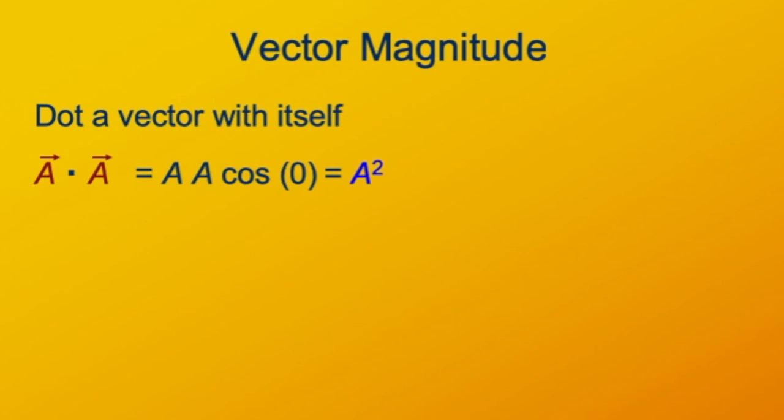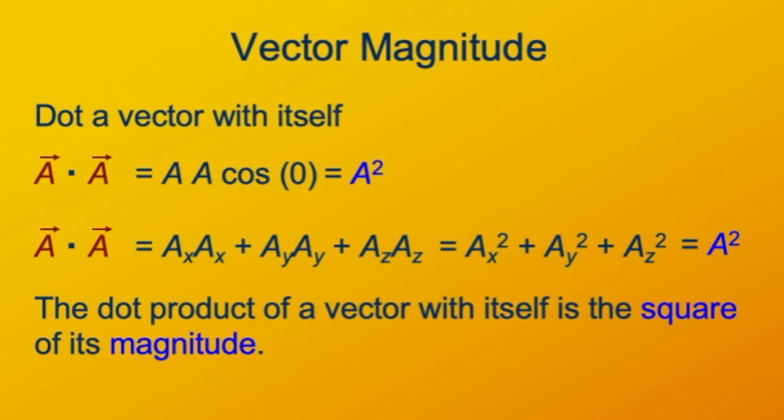If you look at the vector in components, then vector A dot vector A is ax times ax plus ay times ay plus az times az. That's just the sum of squares of the components. So the dot product of a vector with itself is the square of the vector's magnitude.